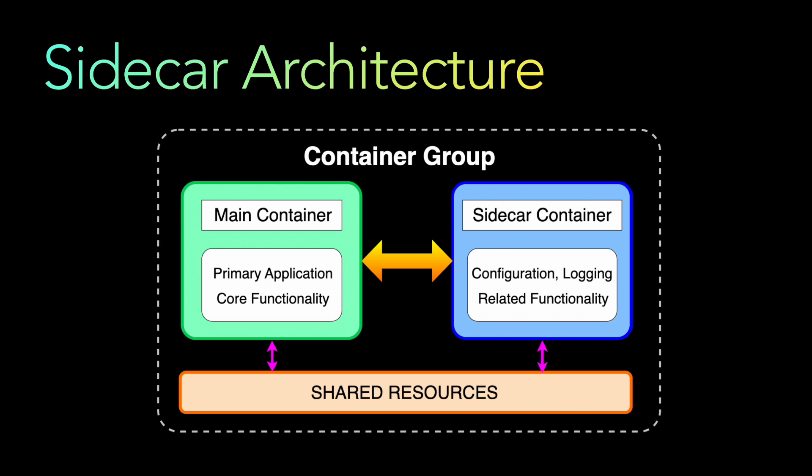Both containers also use shared resources — such as databases, files, storage, or compute — and they are all deployed as part of the same container group. The sidecar pattern helps in keeping the concerns of each microservice separate, enabling more modular, scalable, and maintainable systems.